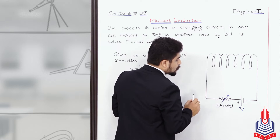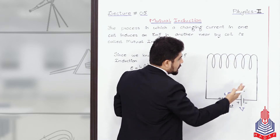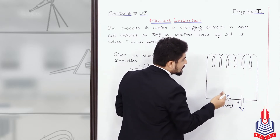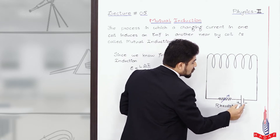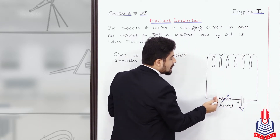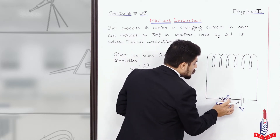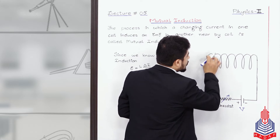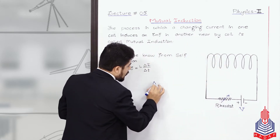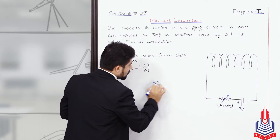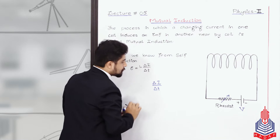Now, dear students, if we use a rheostat in this overall circuit, we can reduce the current. So, the current of this source will decrease. If we can reduce the current here, the current will become a changing current — there will be a changing current with the passage of time.